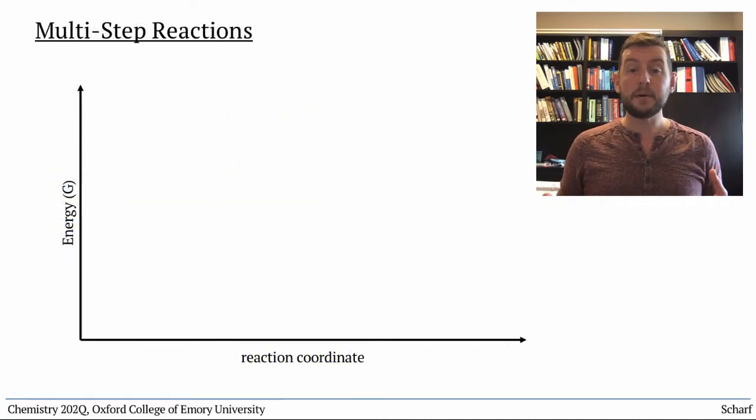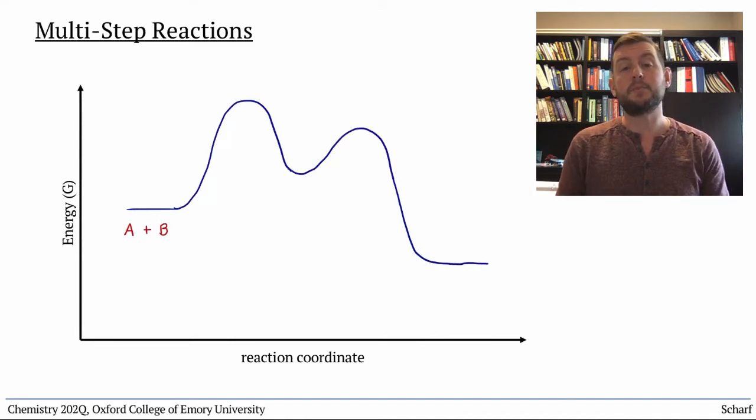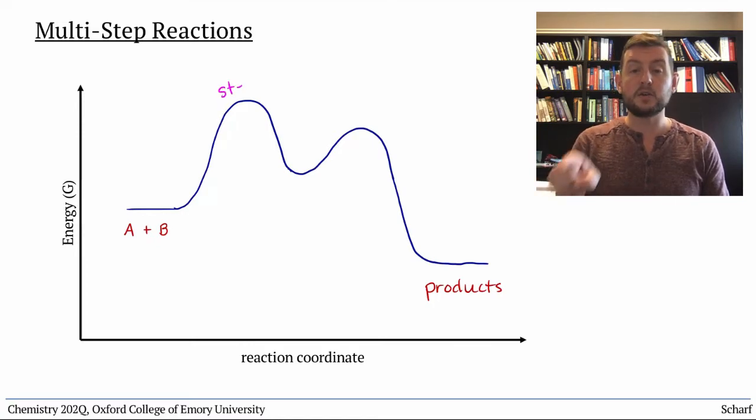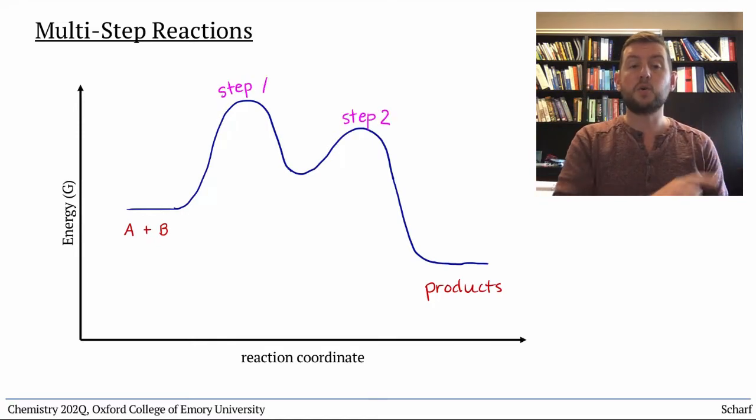Each step occurs by a new collision, so every single step in a multi-step reaction is illustrated by its own hump in a reaction coordinate diagram.